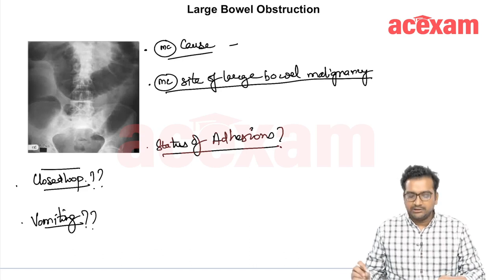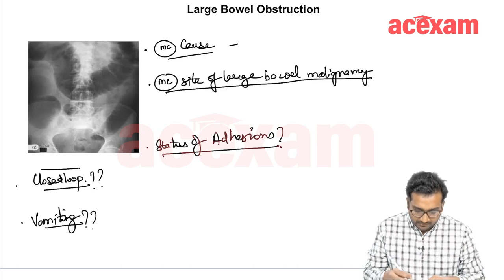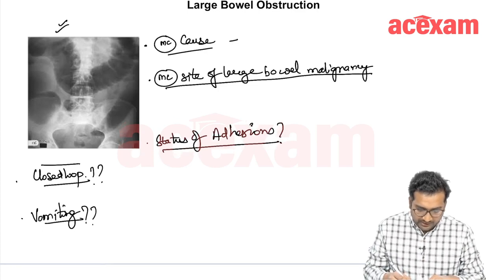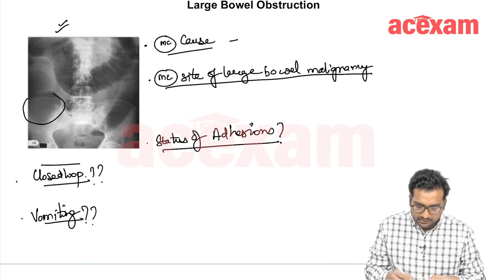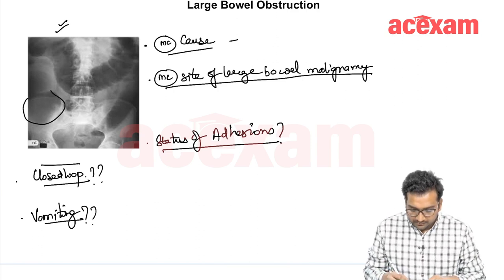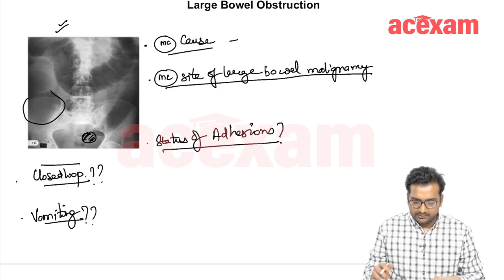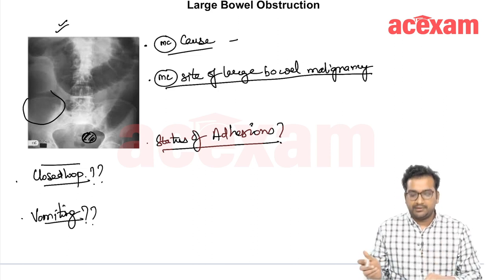The next topic is large bowel obstruction. You can see here in the diagram there is a large bowel obstruction. There is a very dilated cecum and the whole of the transverse colon is also dilated. Most likely the obstruction is at this level, that is at the level of the recto-sigmoid. So this is regarding large bowel obstruction.